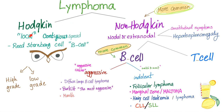Hodgkin's or non-Hodgkin's? Hodgkin's is local, contiguous spread, and the Reed-Sternberg cell is very famous. Non-Hodgkin's has no Reed-Sternberg cell; it's nodal or extranodal spread. It could be B cell or T cell — B cells are the most common — and then you have aggressive or indolent subtypes. We have talked about all of this before.